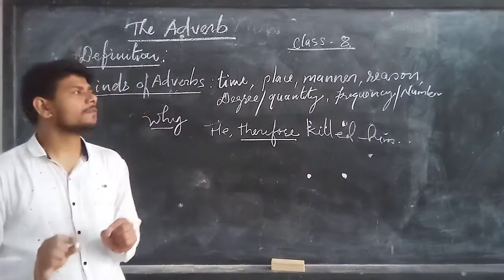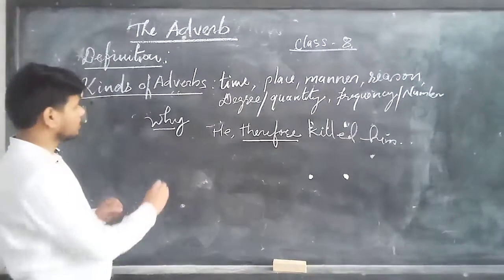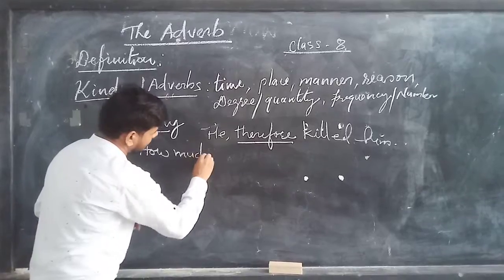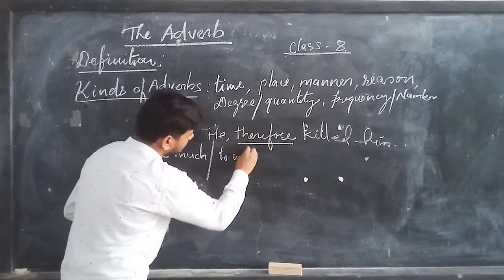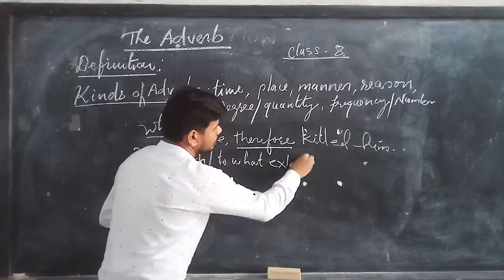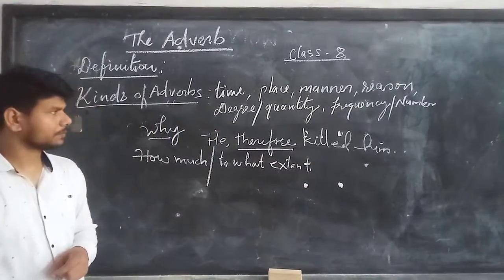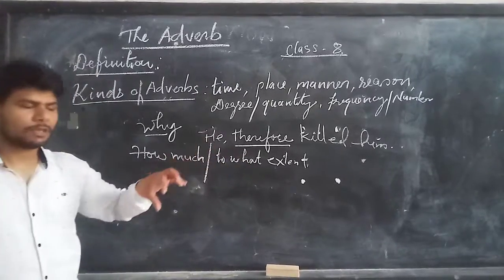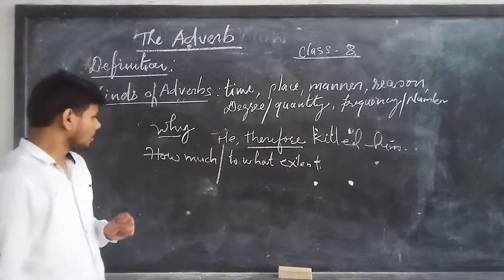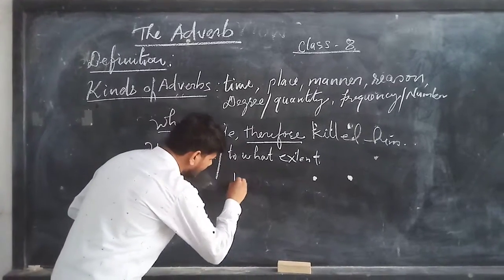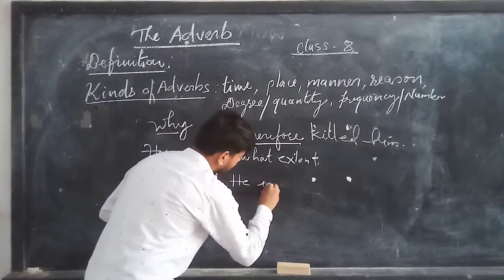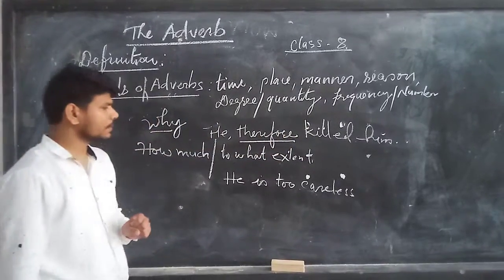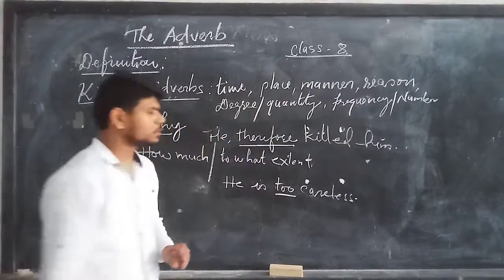The next adverb we will be talking about is adverb of degree or quantity. Adverb of degree asks the question 'how much' or 'to what extent'. For example, he is too careless. How much? Too careless. So 'too' indicates the degree.